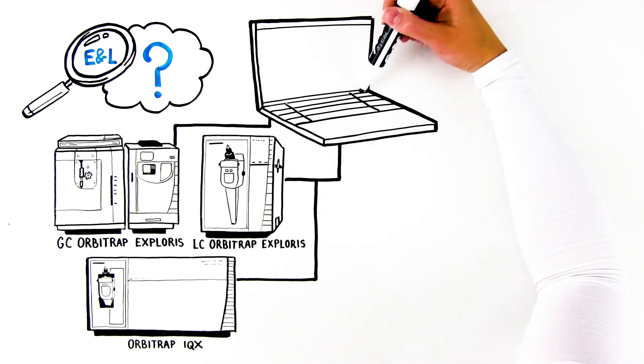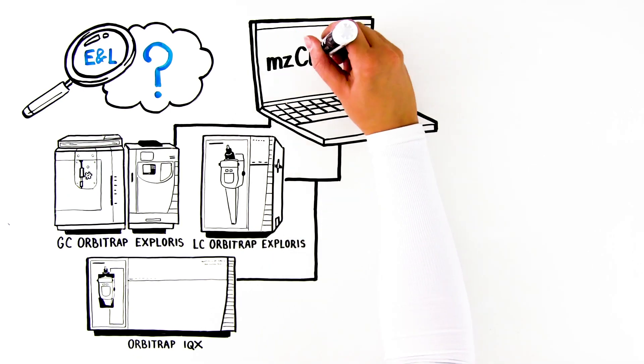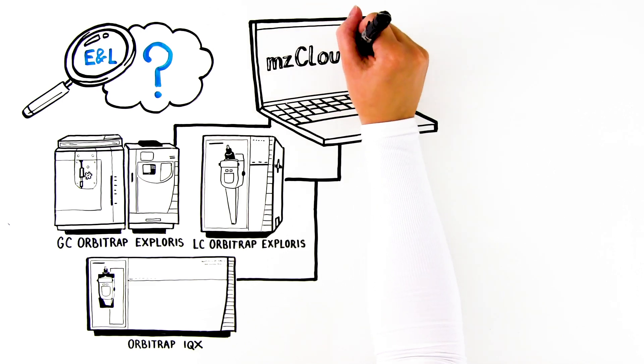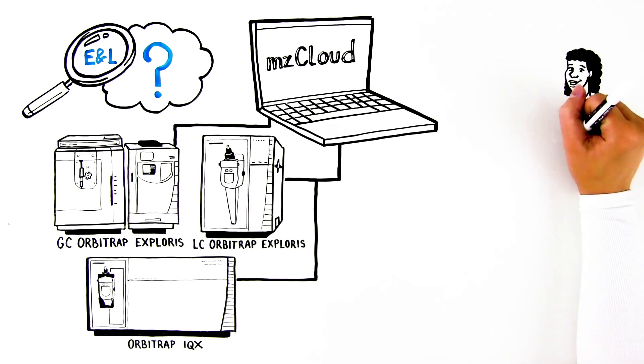By matching this rich data to MZ Cloud high-resolution accurate mass Orbitrap spectral libraries, you can quickly and confidently identify unknowns and provide structural assignments based on accurate mass determination.